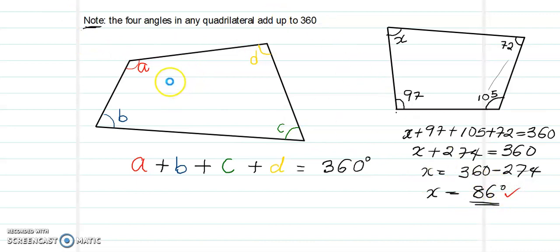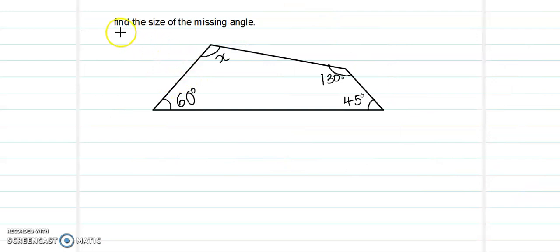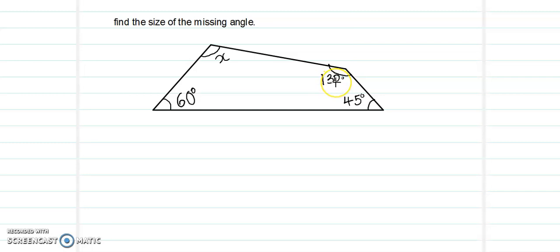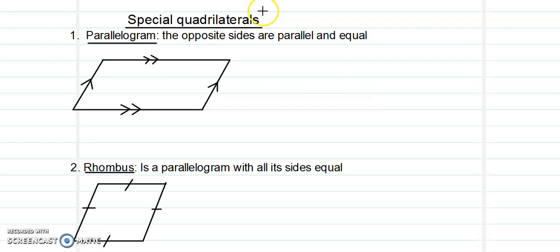In the next one, if you are asked to find the size of x, you can equally solve it. You can pause and solve this — add the known angles, subtract them from 360, and that gives you the value of x. After you have done that and gotten the answer, let's look at the special quadrilaterals.